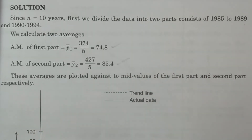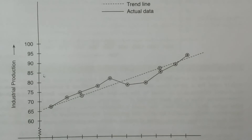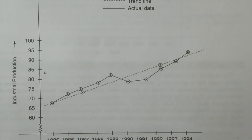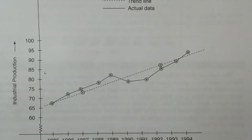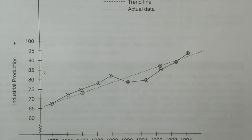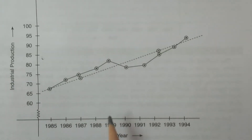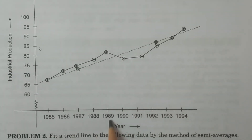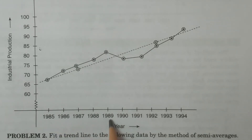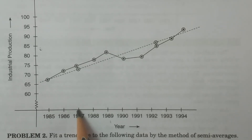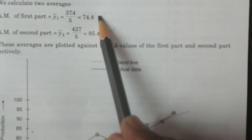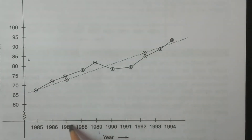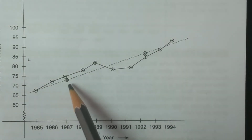These averages are now represented on the graph. You have to consider the variable — industrial production — on the Y axis. You have to consider the midpoint of each part. For the first part, 1985 to 1989, the middle value is 1987. Against the middle period 1987, you plot the point 74.8 for the first part. The average is 74.8 — you have to plot it here.